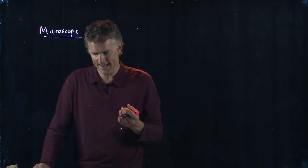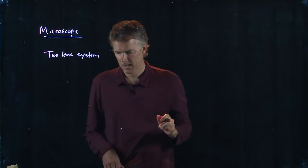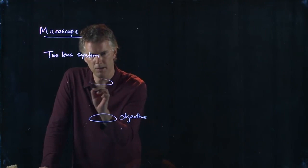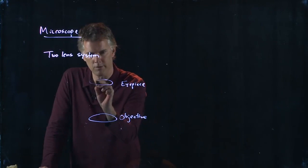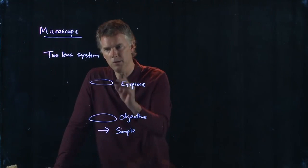So, a microscope in fact has two lenses in it. It is a two lens system and there is an objective and there is an eyepiece and we're drawing it vertically because these things are usually mounted vertically on the table and you put your sample right here and then you of course look down through this eyepiece.